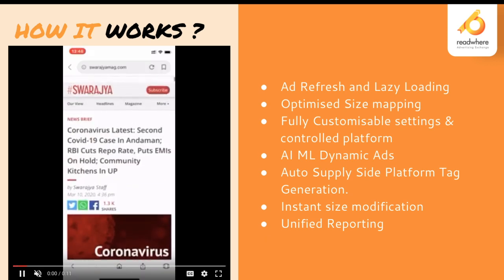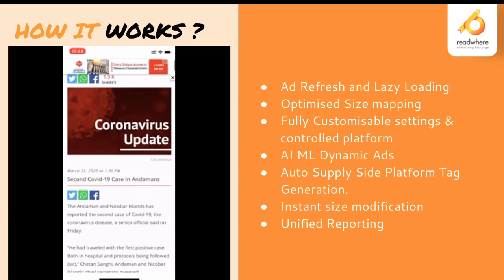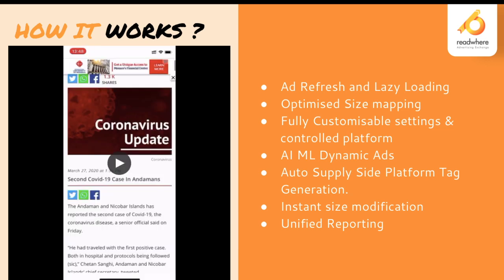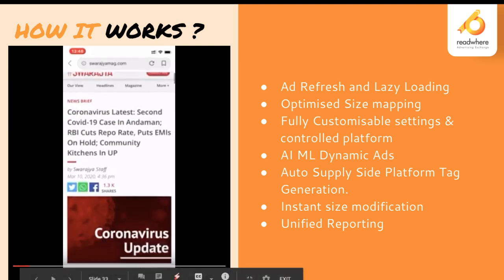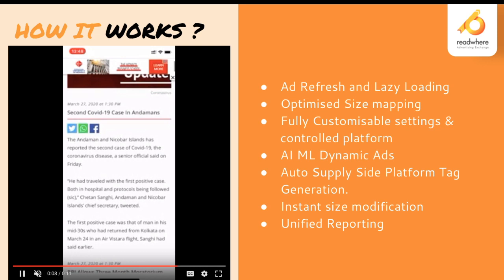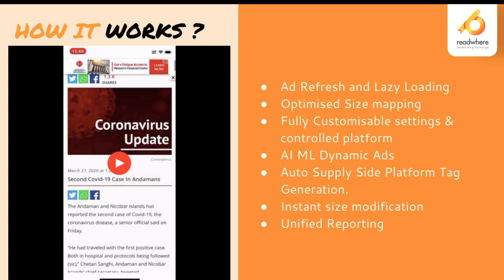There is a constant auto health check that verifies whether tags are broken and repairs them through tag regeneration. There is unified bidding and a simple reporting dashboard. An example video shows a smooth ad experience — the ad appears only when the user scrolls the site, so when they land on the page the ad isn't there, but as they start reading content, the ad is shown. This is called an AI/ML dynamic ad that appears on user action. Ads also refresh on infinite scroll with lazy loading, and instant size modification is possible from the backend.